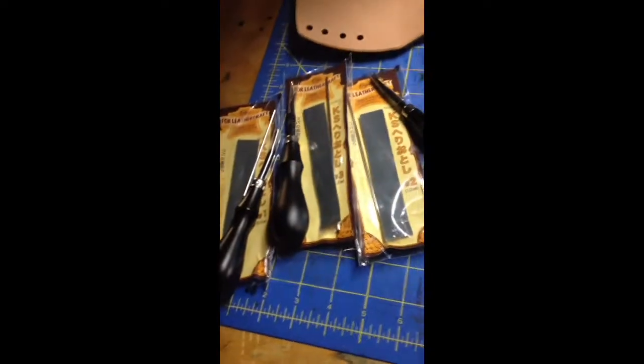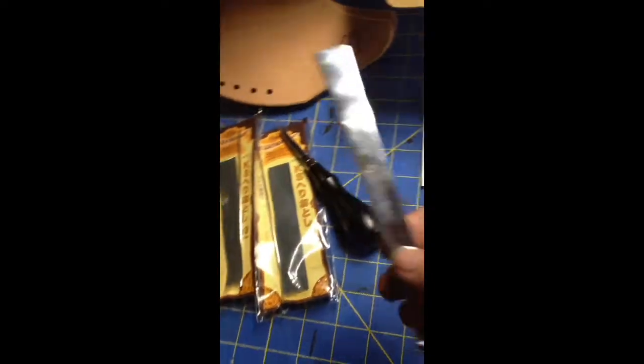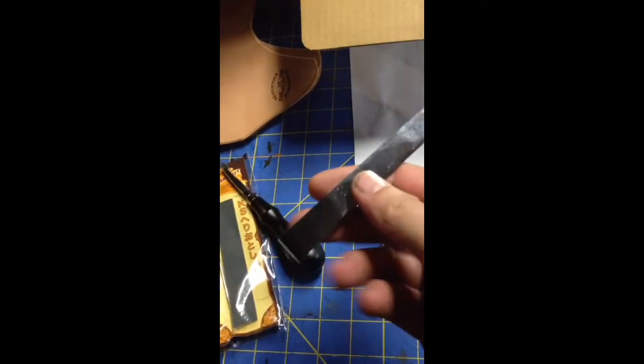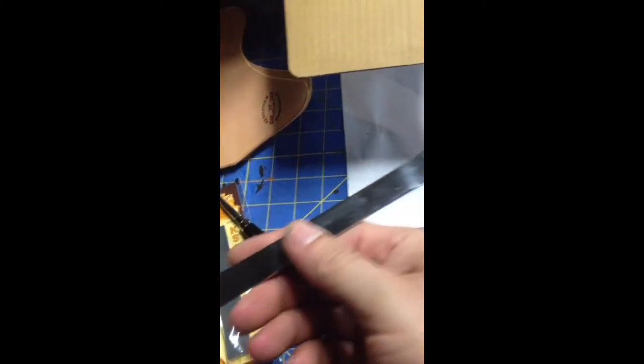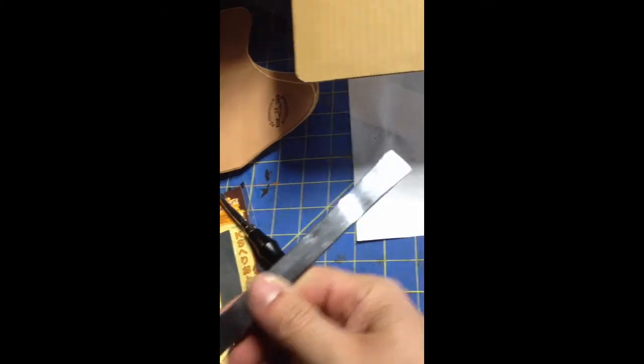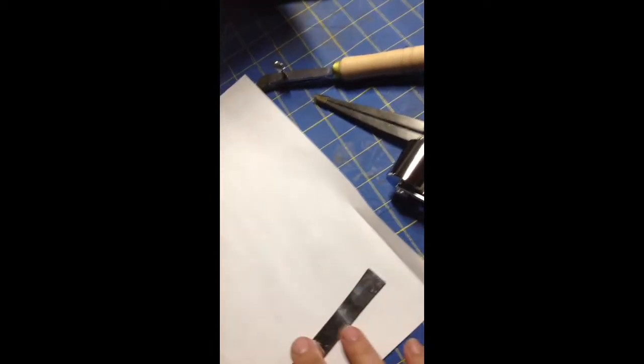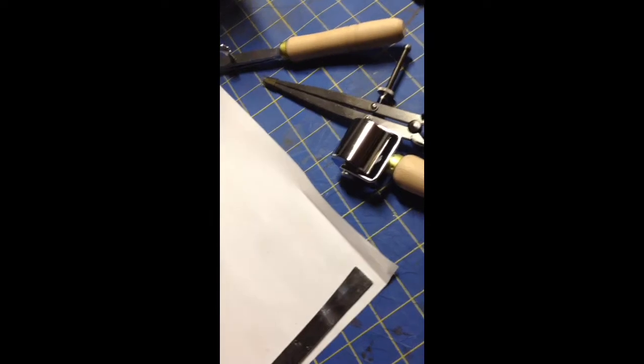Another thing that I received in the same package was this sort of little pry bar. It's used for if you're going to make something like a wallet, let's say this piece of paper is a piece of leather and you have some thin leather that you want to fold over and glue to finish that edge.